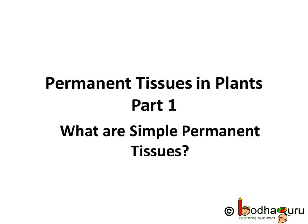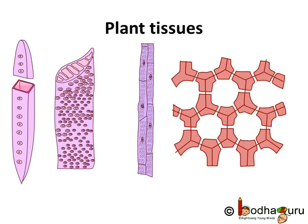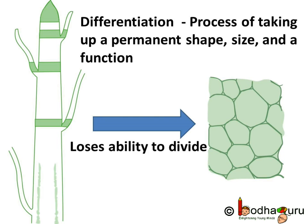Good morning everyone. A cell is a functional unit of a body, so it has to be alive for performing the various functions. But even dead cells perform specialized functions in plants. We already know that cells formed by meristematic tissues take up a specific role and lose the ability to divide. They now become permanent tissues.